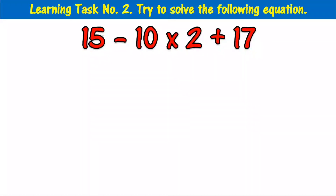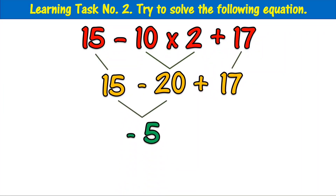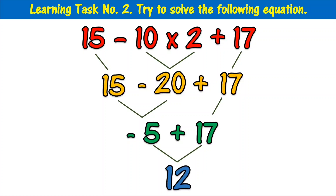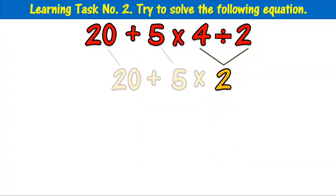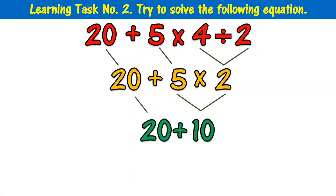15 minus 10 times 2 plus 17 equals 12. 20 plus 5 times 4 divided by 2 equals 30.